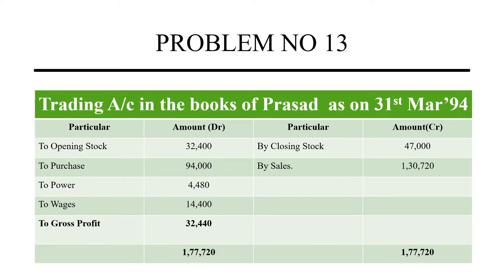For Final Accounts, we have three parts. One is trading account — that means direct expenses and incomes. Next one is profit and loss account — that means indirect income and expenses. And balance sheet — assets and liabilities.